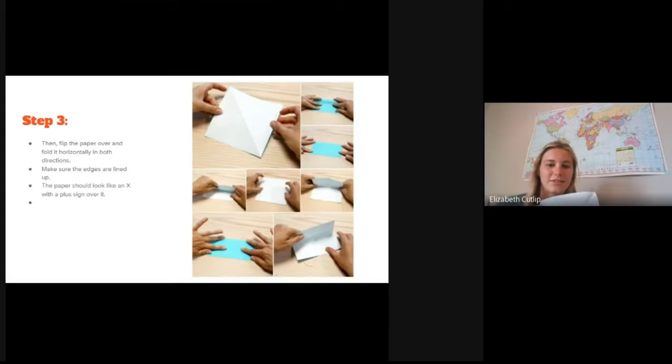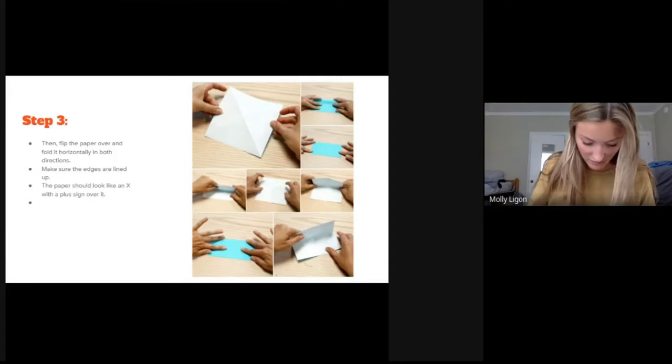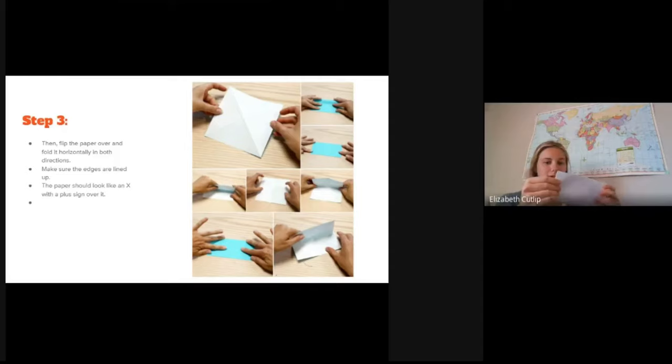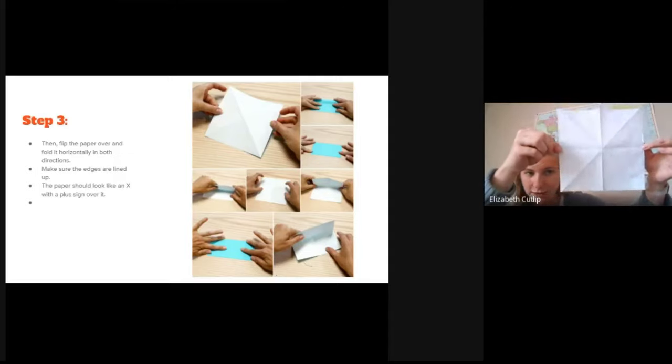So next is to flip the paper over and fold it horizontally in both directions and make sure that your edges are lined up again. So hamburgers and hot dog style now. Flip it and do it the other way, another X. So you should have something like a star in folding marks. There's like a little star.